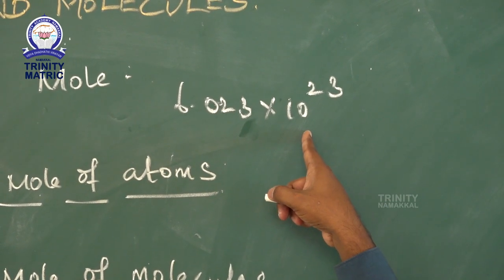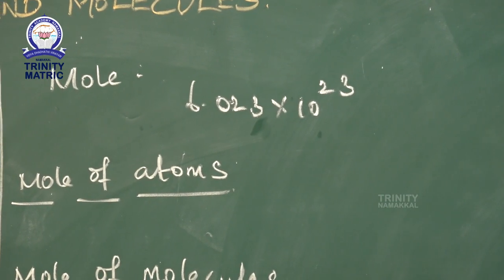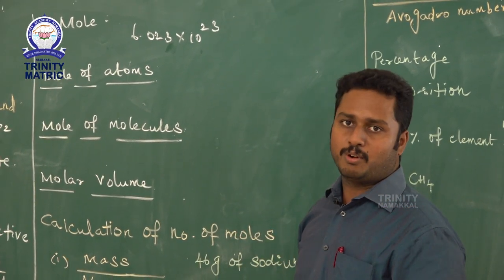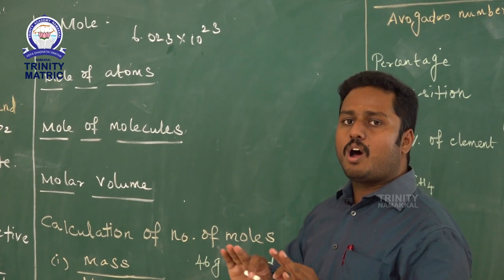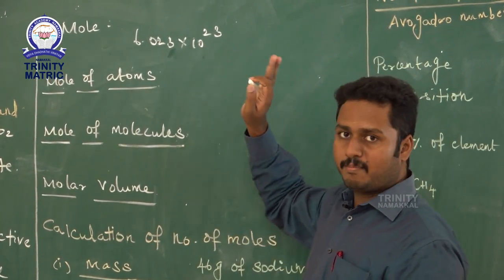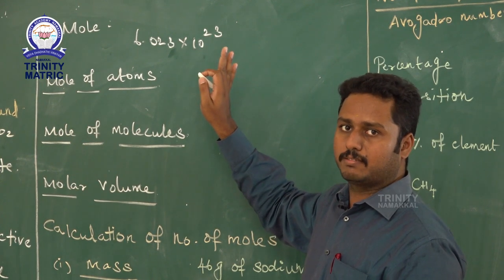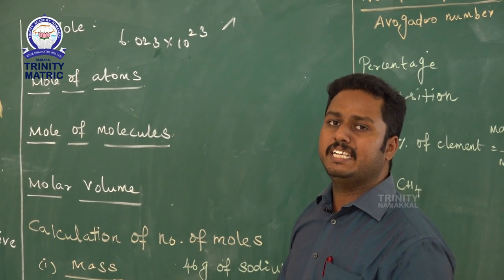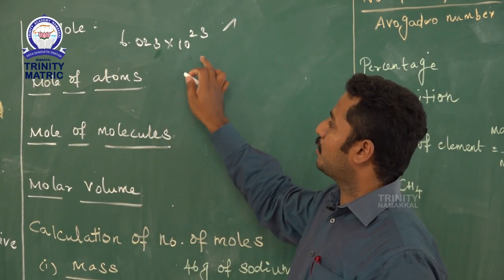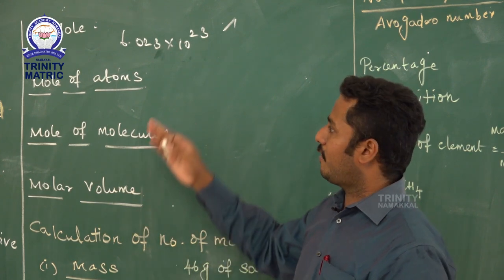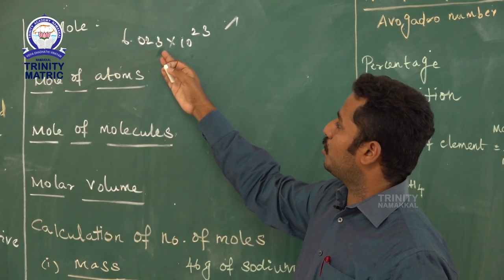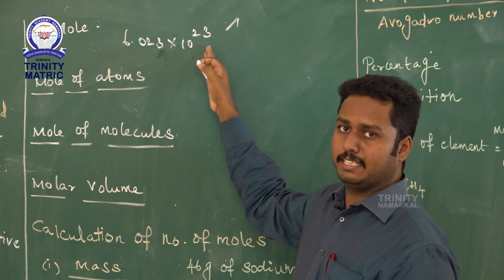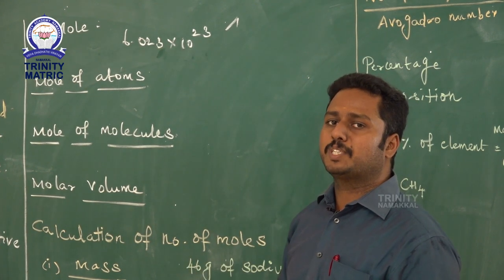One mole of any substance — for example, iron, aluminium, copper sulfide, or carbon dioxide — all contain equal numbers of atoms or molecules, which is Avogadro's number of particles: 6.023 × 10²³. Now, how do we measure one mole of a substance? All one-mole quantities of a substance have an equal weight corresponding to their atomic or molecular mass.